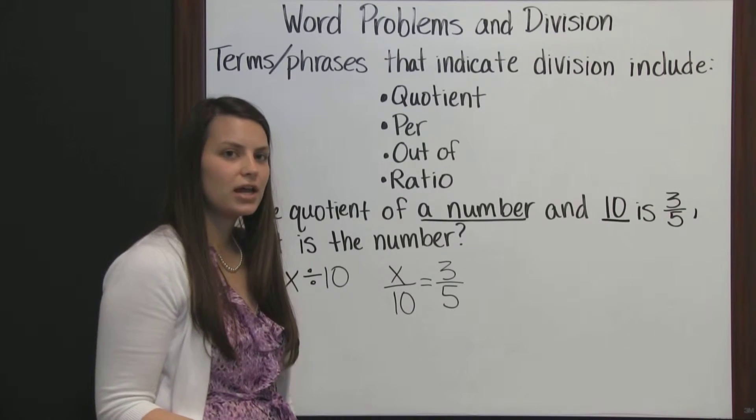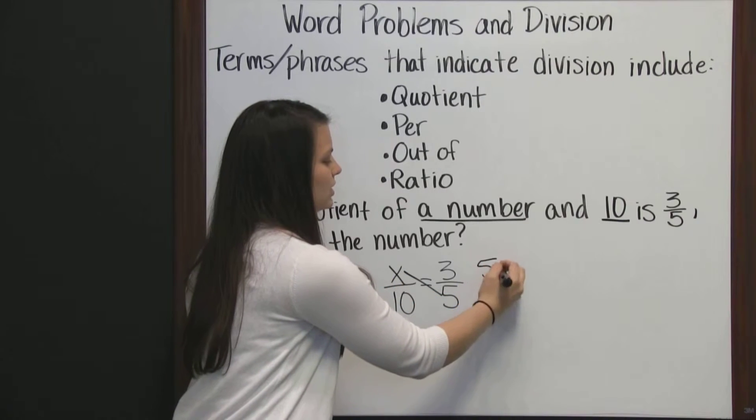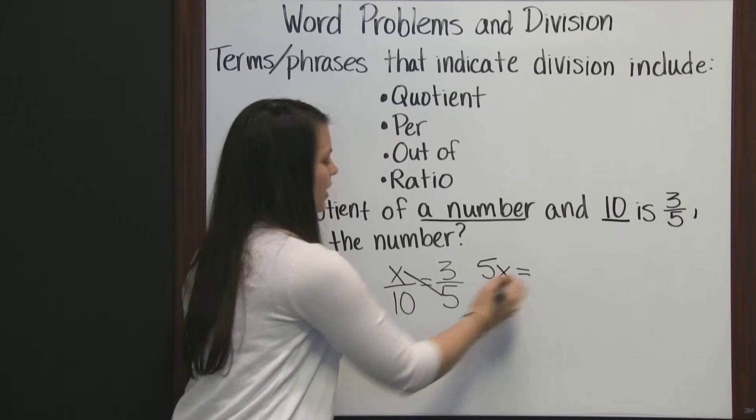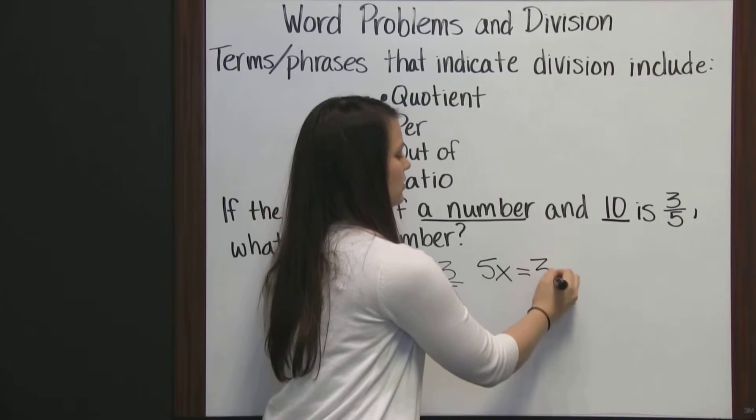So to solve this proportion, we're going to cross multiply. x times five is five x. And that's equal to three times ten, which is thirty.